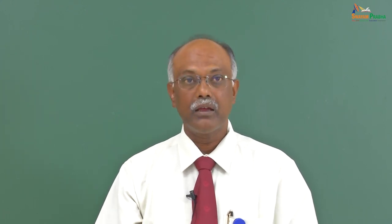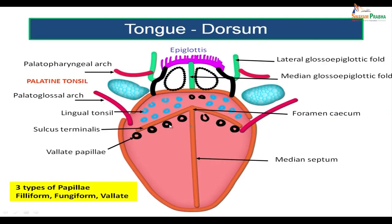Now let's have a detailed look at the dorsal surface. This is the midline fibrous septum which divides the tongue into two parts, and this is the prominent sulcus terminalis. There is a fold extending from the back of the tongue to the epiglottis called the median glossoepiglottic fold. On the sides, there is another fold extending from the tongue to the lateral wall of the pharynx called the lateral glossoepiglottic fold.